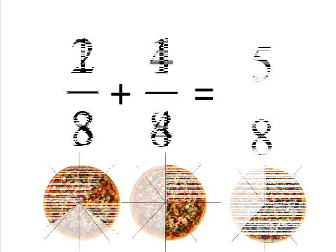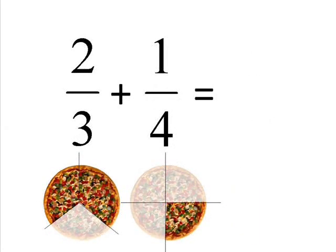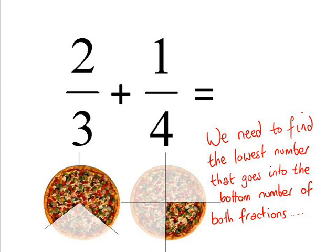Something a bit more difficult now. 2 thirds plus a quarter. To work out what we're going to have to change these fractions into, we're going to be looking for a number that both 3 and 4 go into, the bottom numbers of both these fractions. And that number is 12.